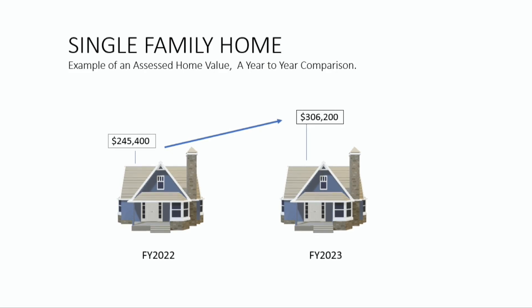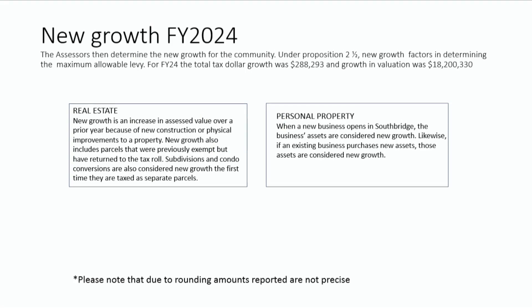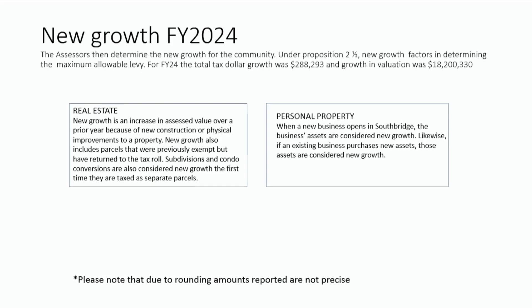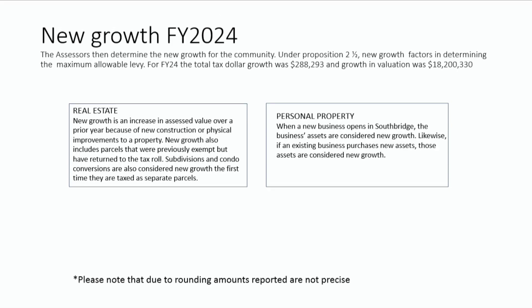Here's what happened this year. We had a significant value increase to residences. Last year, the average single-family home was $245,000. Through this year, it went up to $306,000 for the average home. Growth is anything new — new homes, new additions, new subdivisions — anything that the community grew by. It actually allows you to increase your levy limit by the amount of taxes you're collecting for these new developments and new properties.